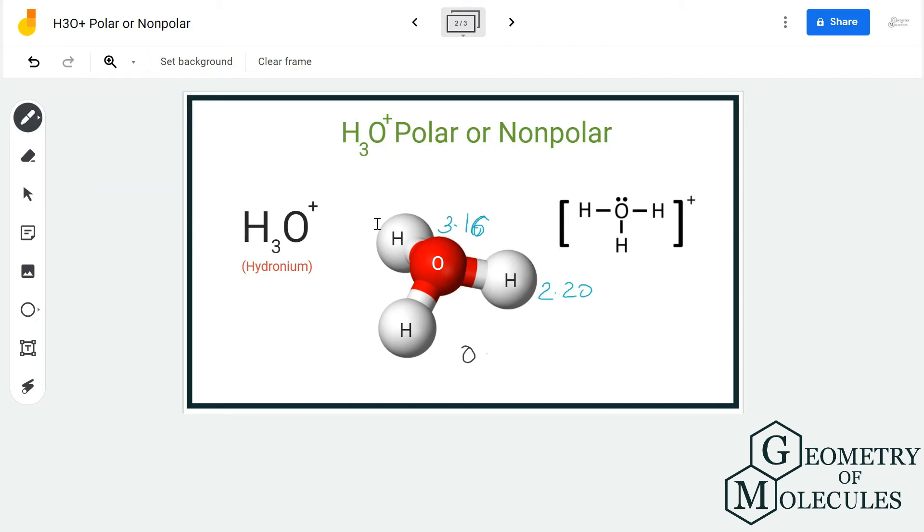So if you calculate the difference between these two atoms, it is higher than 0.4, which means there will be a dipole moment in this molecule and the dipole moment will be towards the oxygen atom. So all three vectors will be placed towards the oxygen atom.